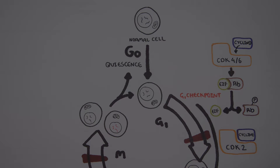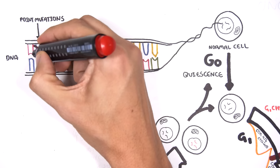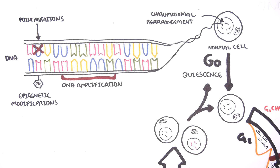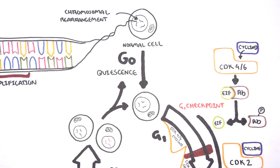Looking at this normal cell and its DNA — a double-stranded helix made up of four types of nucleotides — mutations can occur within the DNA, causing changes to the cell. Types of mutations include point mutations, a single change in a nucleotide; DNA amplification, where a gene gets copied many times; chromosomal rearrangement, where chromosomes attach to one another where they shouldn't; and epigenetic modifications such as methylation and acetylation, which can silence certain genes or make them more active. With these mutations, a normal cell can become cancerous.